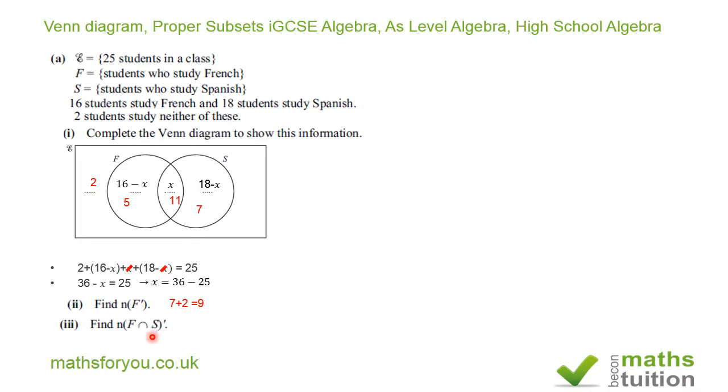And for section 3, it says the number of students who are not in this section F intersection S. So we know that F intersection S is 11. So F intersection S prime is going to be 25 minus 11 and that's 14. Or you can get it by saying 7 plus 5 is 12 and 12 plus 2 gives you 14. Either way, it's right.